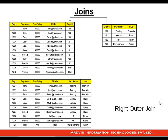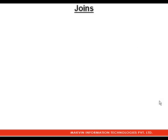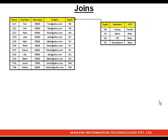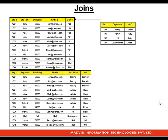The last scenario is all rows from the left table and all rows from the right table together. This is nothing but a full outer join. Now let's look at how to write the query for this.